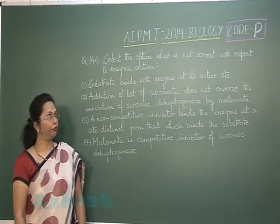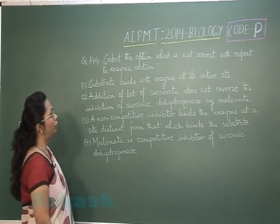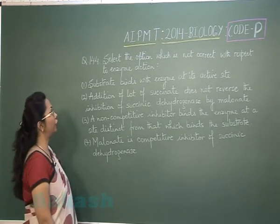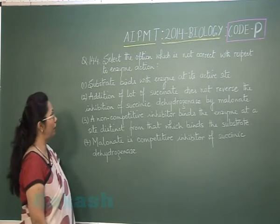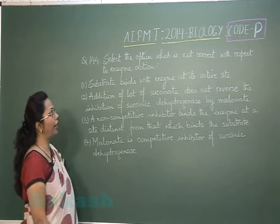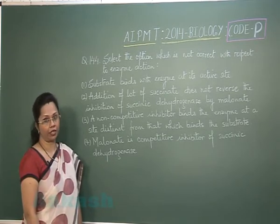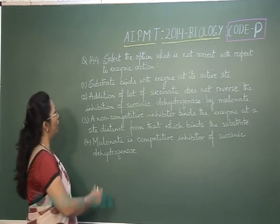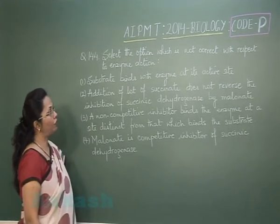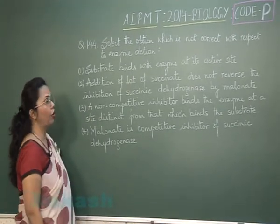Question 144: select the option which is not correct with respect to enzyme action. The first option is that substrate binds with enzyme at its active site — that is true. Option two states that addition of a lot of succinate does not reverse the inhibition of succinic dehydrogenase by malonate.